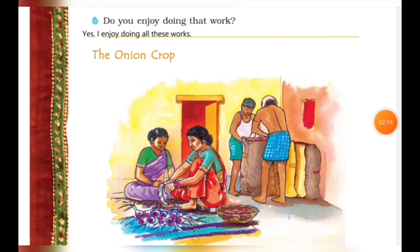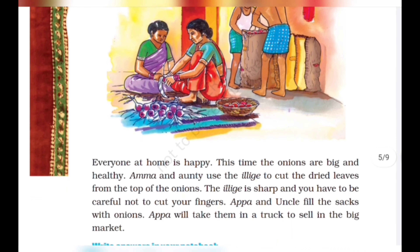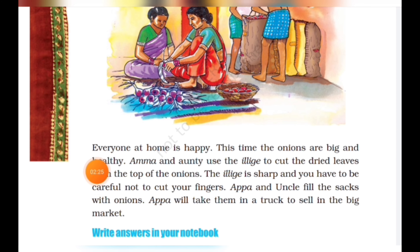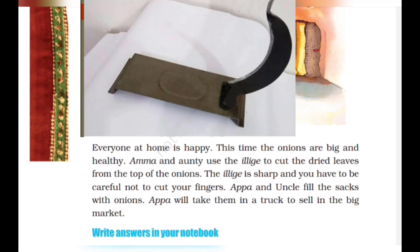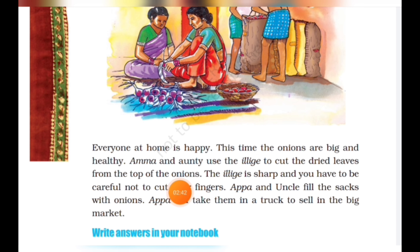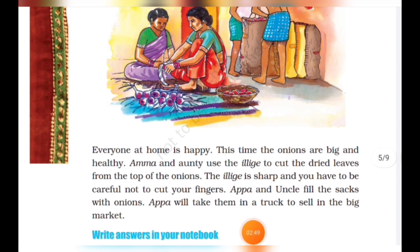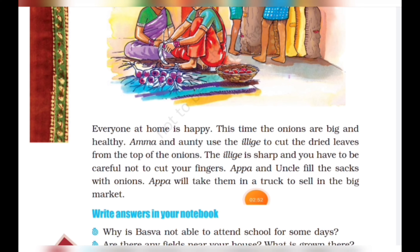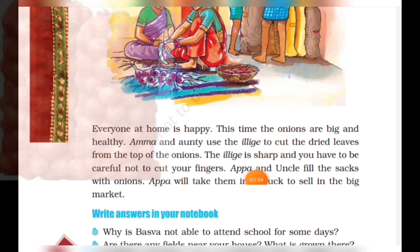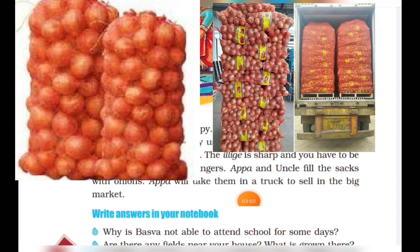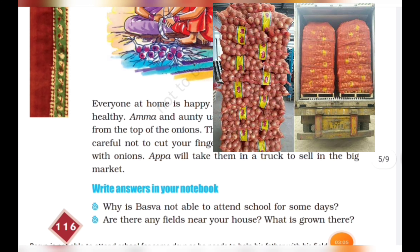The onions are now getting ready to be transported to the market. Everyone at home is happy — the onions are big and healthy. Amma and auntie use the ilige (called Borthi in our local language) to cut the dried leaves from the top of the onions. The ilige is sharp, so you have to be careful not to cut your fingers. Appa and uncle fill the sacks with onions, and Appa will take them in a truck to sell in the big market.